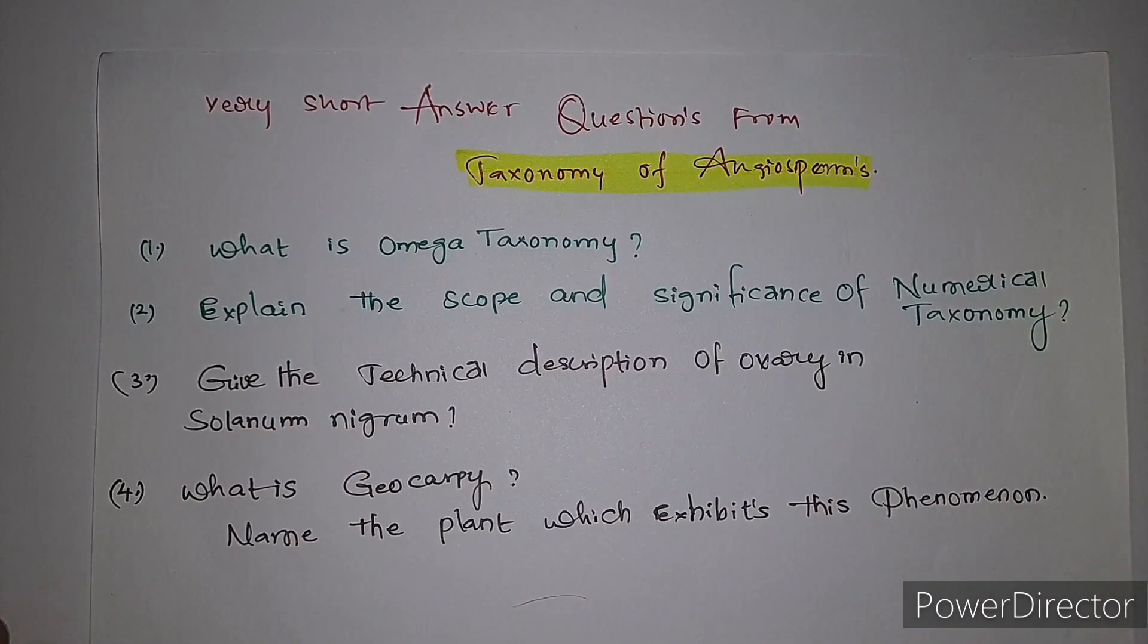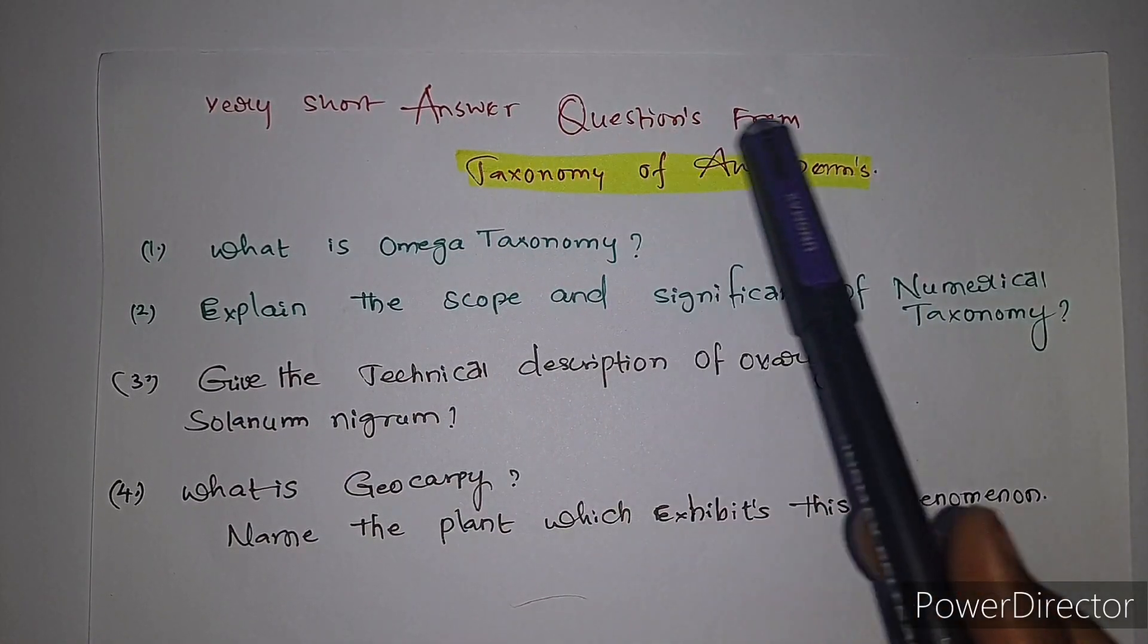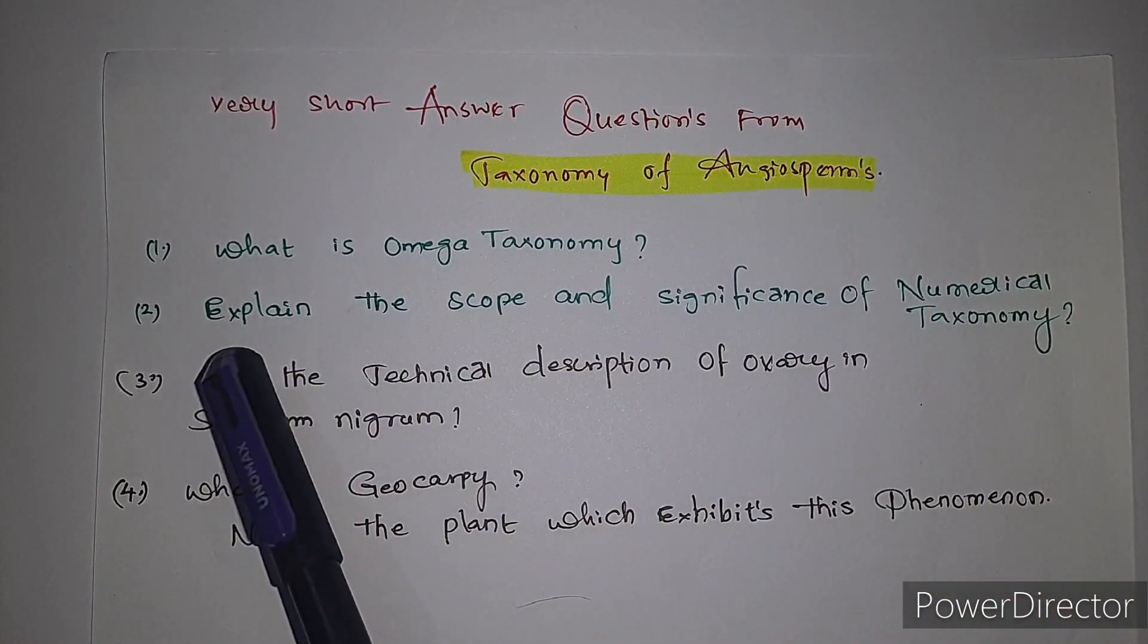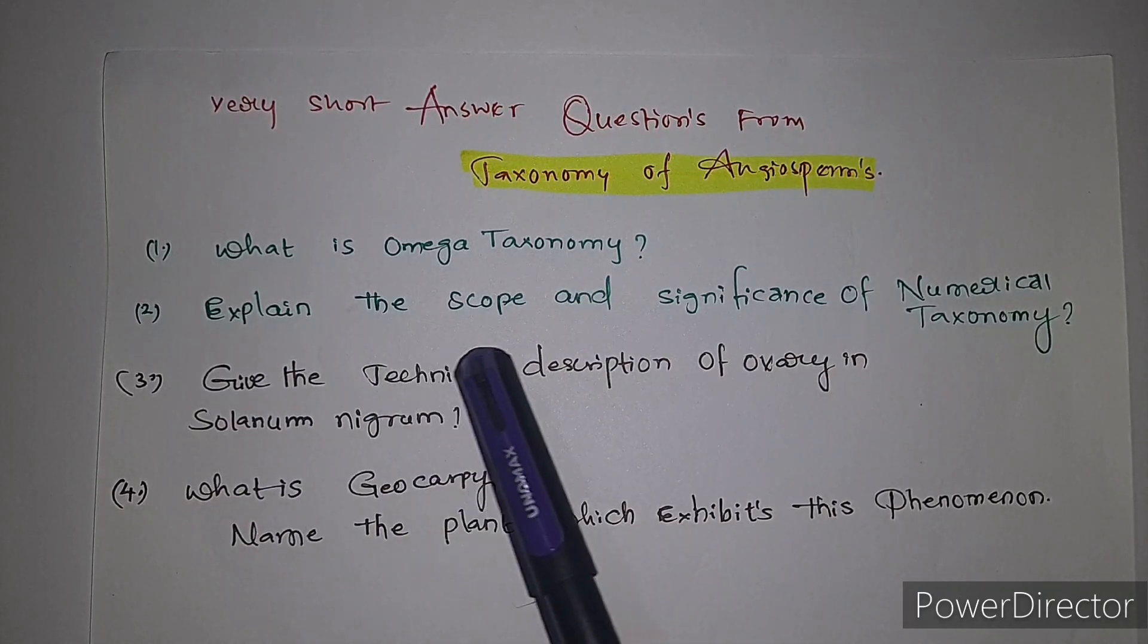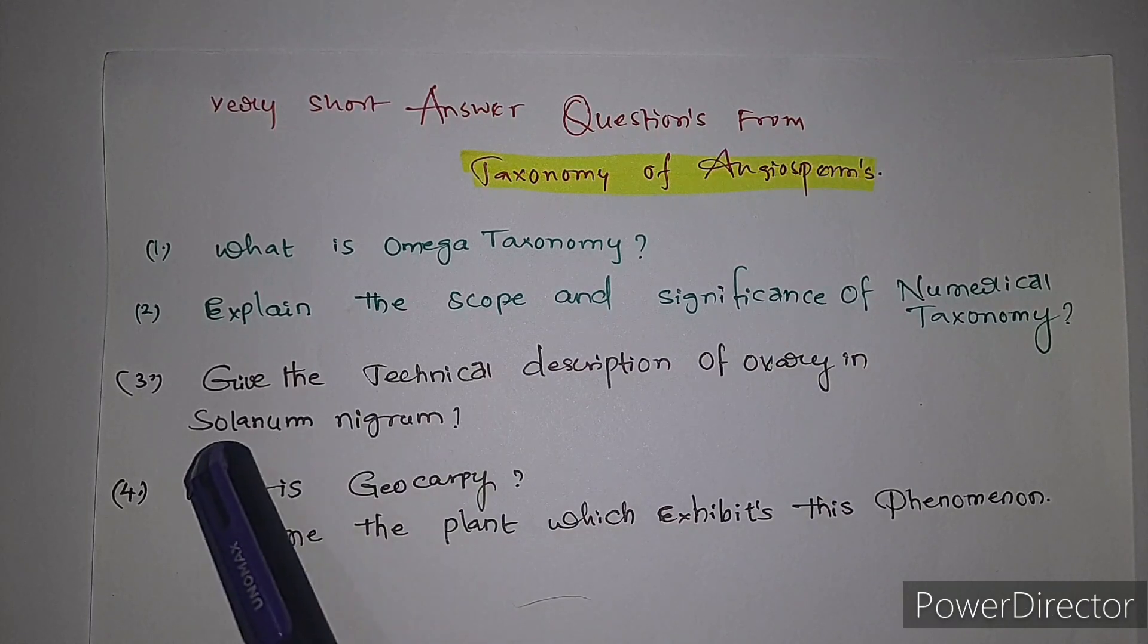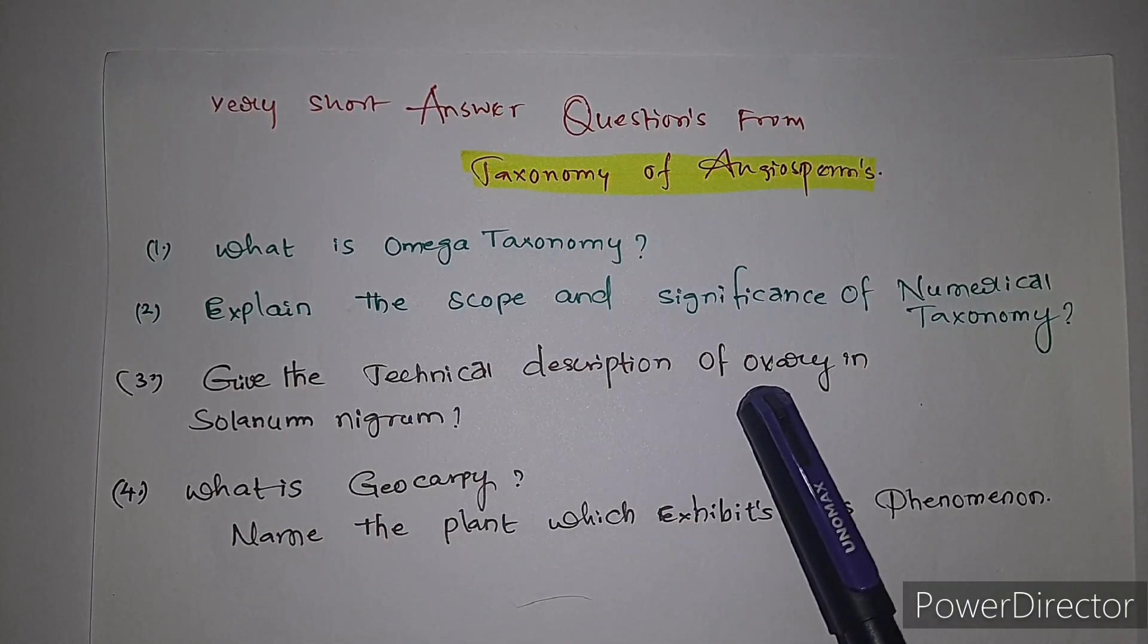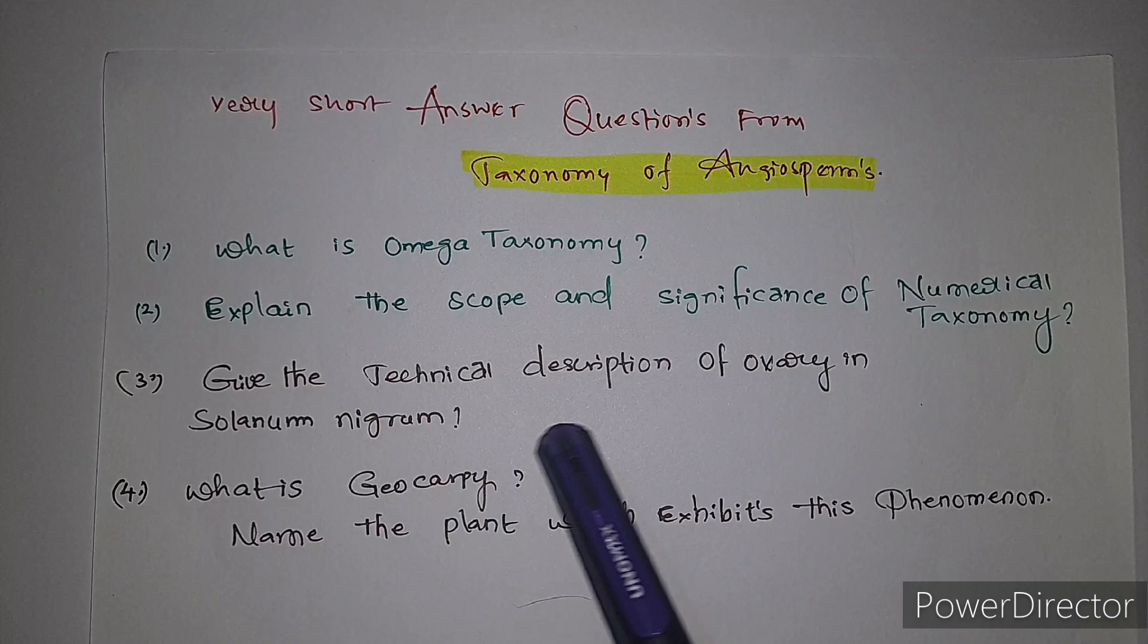Very short answer questions from taxonomy of angiosperms. First question: what is omega taxonomy? Second question: explain the scope and significance of numerical taxonomy. Third question: give the technical description of ovary in Solanum nigrum.